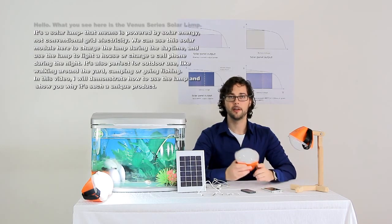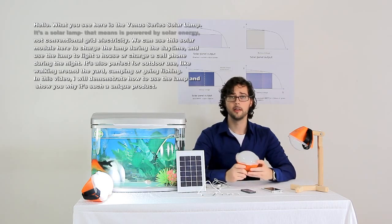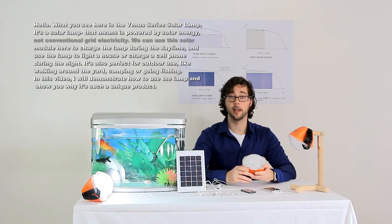Hello. What you see here is the Venus series solar lamp. It's a solar lamp that means it's powered by solar energy, not conventional grid electricity.